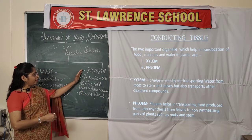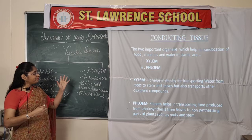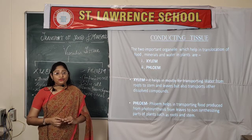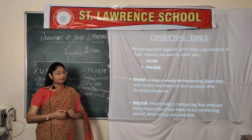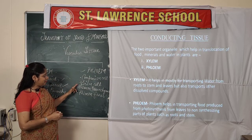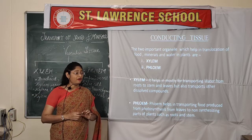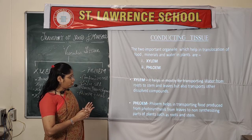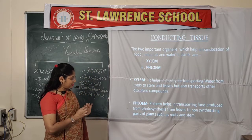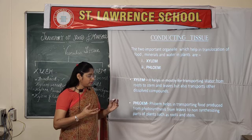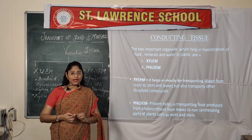The second important vascular tissue is phloem. Phloem appears tubular in structure, arranged back to back in long tube-like processes, and is made up of living cells. It comprises of companion cells, sieve cells, phloem parenchyma, and phloem fibers. The main function of phloem is to transport food produced from photosynthesis from leaves to all the non-synthesizing parts of the plant like roots, stem, flowers, petioles, and buds.